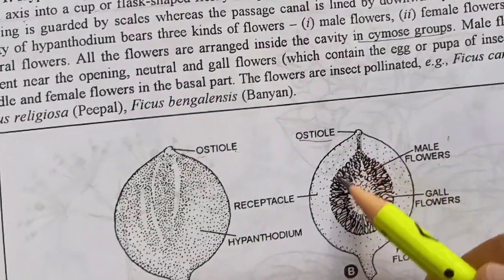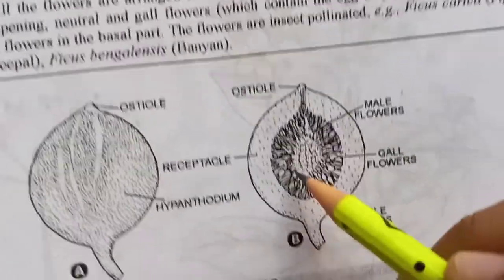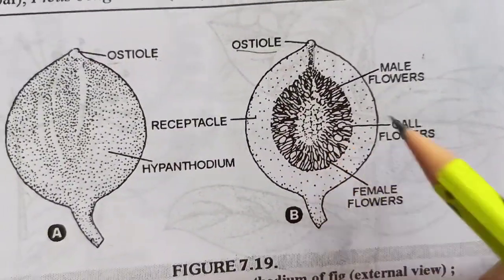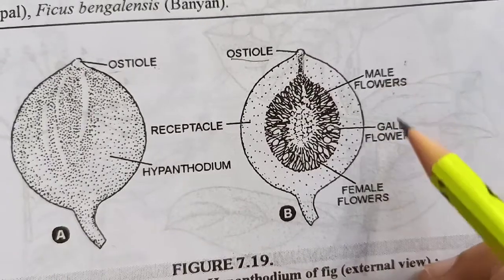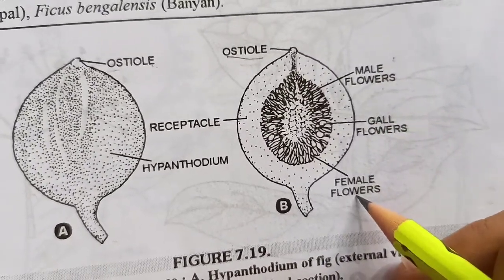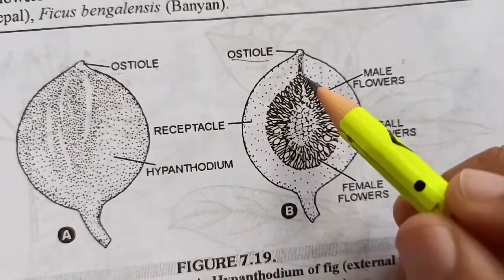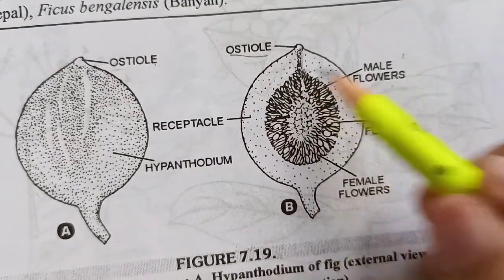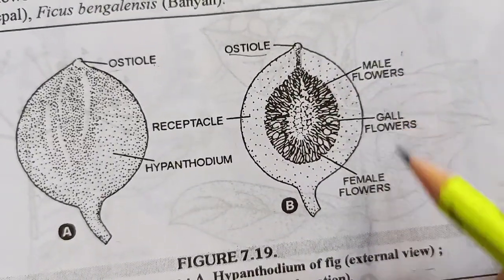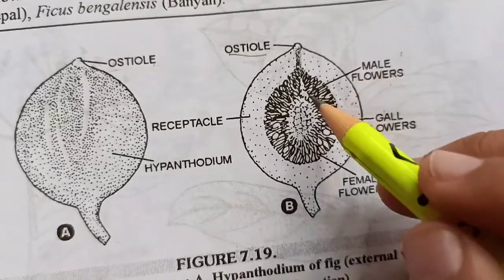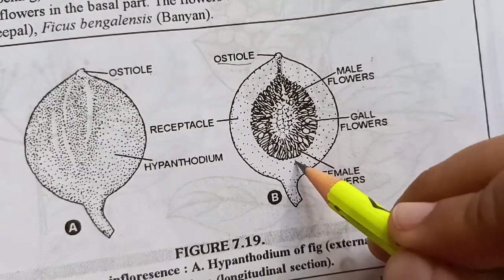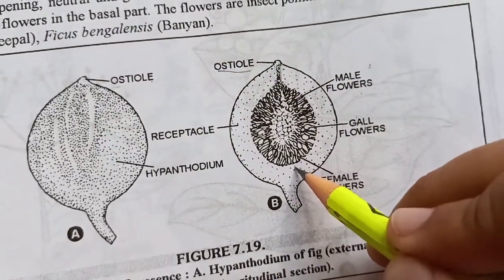Ab jo cavity hai hypanthodium ki, it consists of three different types of flowers, which are male flowers, neutral flowers, and female flowers. So the cavity of hypanthodium contains three types of flowers. And these flowers are arranged in a cymose inflorescence manner.